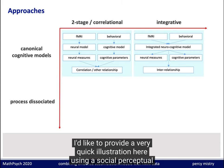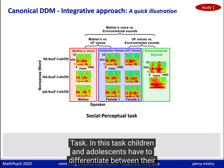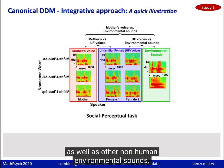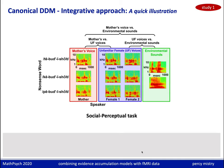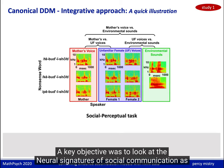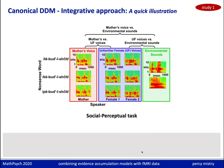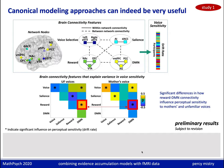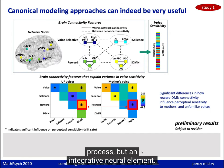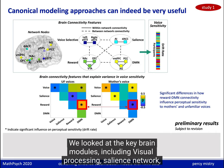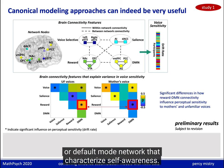I'd like to provide a quick illustration using a social perceptual task. In this task, children and adolescents had to differentiate between their mother's voices and unfamiliar female voices, as well as other non-human environmental sounds. A key objective was to look at the neural signatures of social communication as the importance of novel and non-familial social communication partners increased over a developmental period. We looked at key brain modules including voice processing, salience network, the reward network, and the DMN or default mode network that characterizes self-awareness.